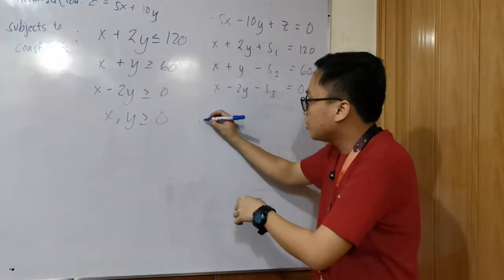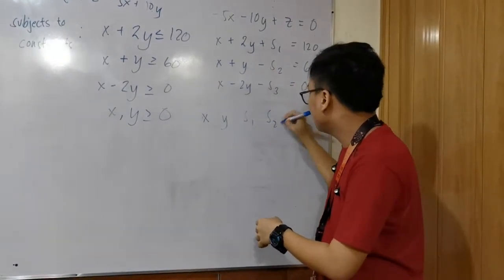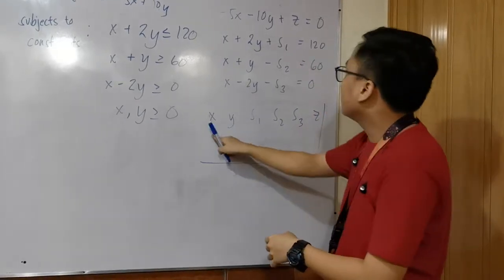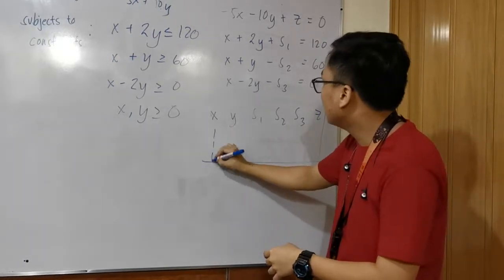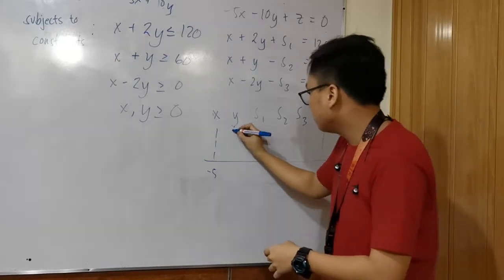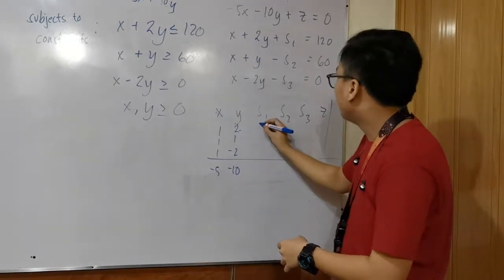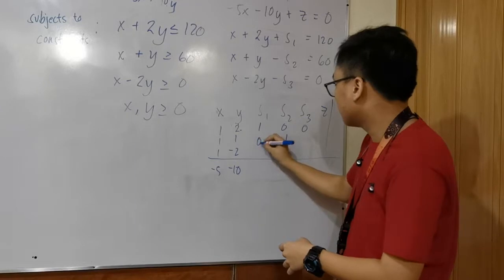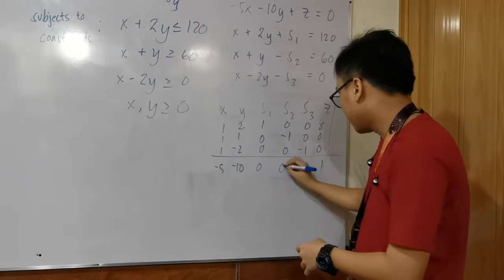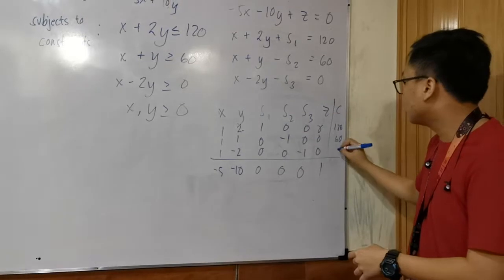We will make a table using these variables: s1, s2, s3, and z. For x, we have 1, 1, 1, and negative 5. For y, we have negative 10, negative 2, 1, negative 2, and negative 10. The slack variable columns follow with 1, negative 1, 0, 0; 0, 0, negative 1, 0; negative 1, 0, negative 1, 0; and 1, 0, 0. The constants are 120, 60, 0, and 0.